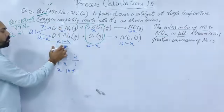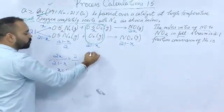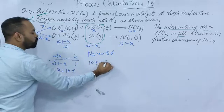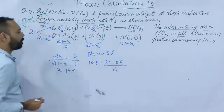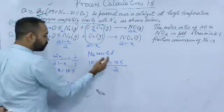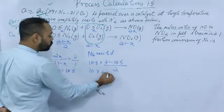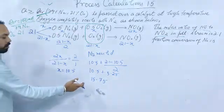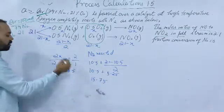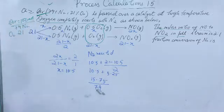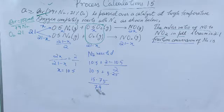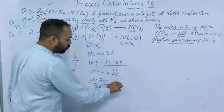With x = 10.5, the total N2 reacted is: x from reaction 1 plus (21 − x)/2 from reaction 2 = 10.5 + 10.5/2 = 10.5 + 5.25 = 15.75. The fractional conversion of nitrogen = 15.75 / 79 ≈ 0.2. Note that the question asks for fractional conversion, so no need to multiply by 100.